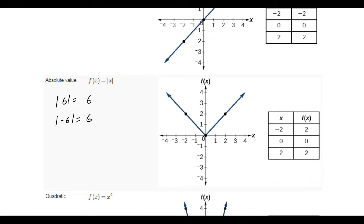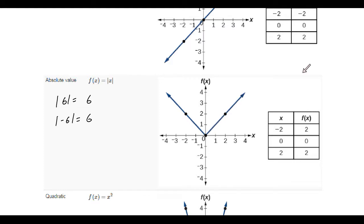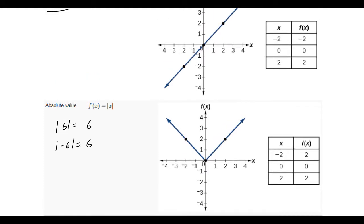So we have this v shape. If you can notice, from one side, it looks just like the identity function. That's why these are next to each other. From the other side, it's actually the negative identity function.